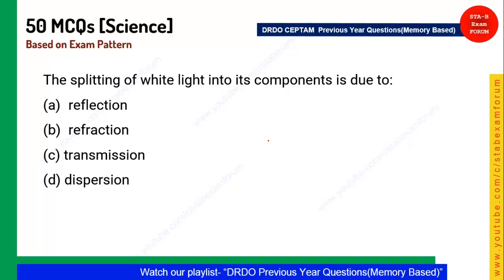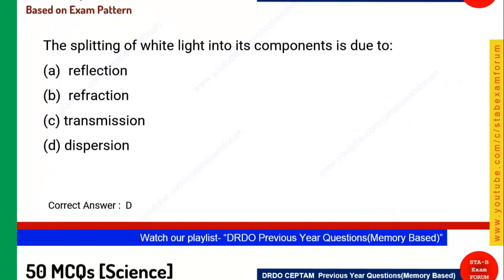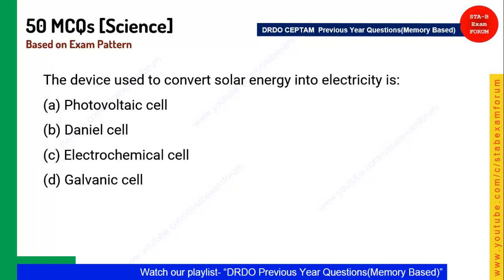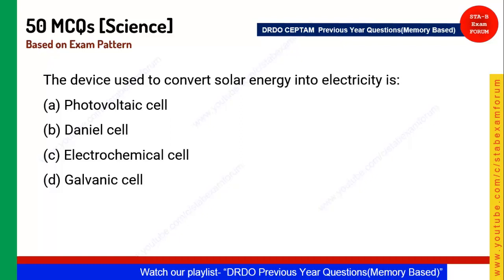The splitting of white light into seven colors is due to dispersion. Next question: Which device converts solar energy into electricity? Solar energy is related to photons, and a photovoltaic cell converts sunlight into electrical energy. Option A is the correct answer.